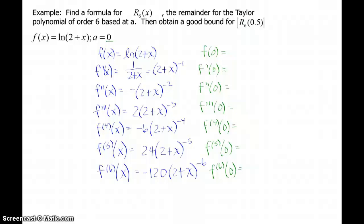If I plug 0 into my function, I get ln(2+0), so that's ln(2). If I plug 0 into f', I get 1/(2+0), that's 1/2. If I plug into f'', I get negative 1/(2+0)^2, so that's -1/4. For the third derivative, I get positive 2/2^3. That simplifies. I get -6/2^4, which will also simplify. Now I get 24/2^5.